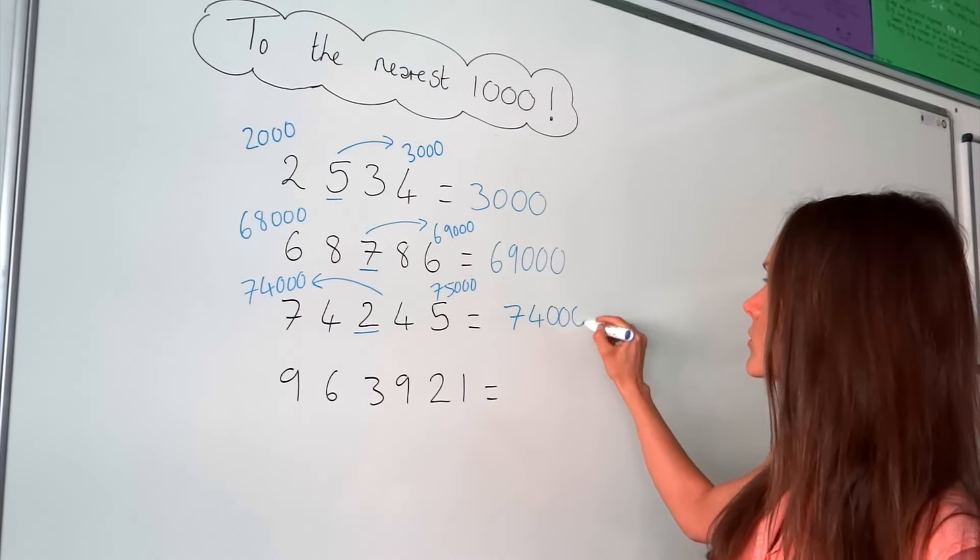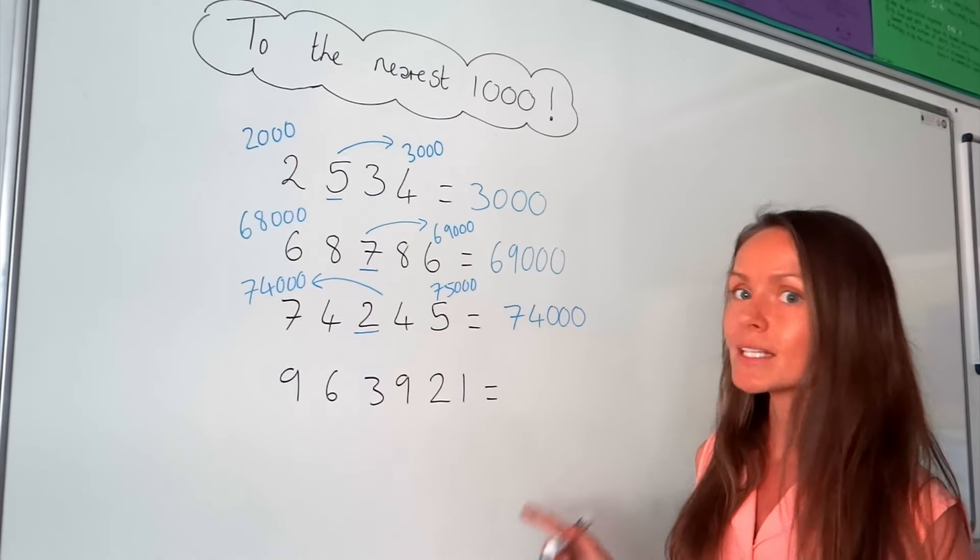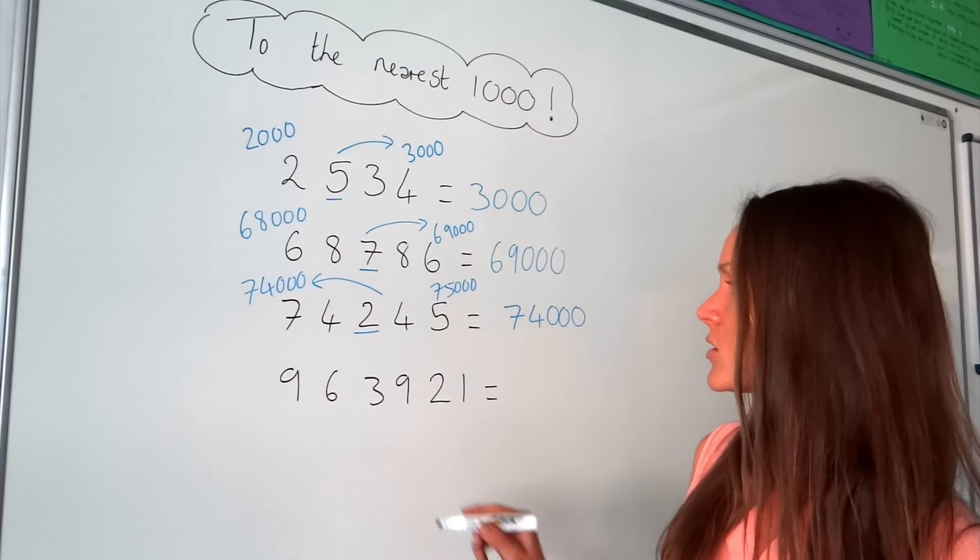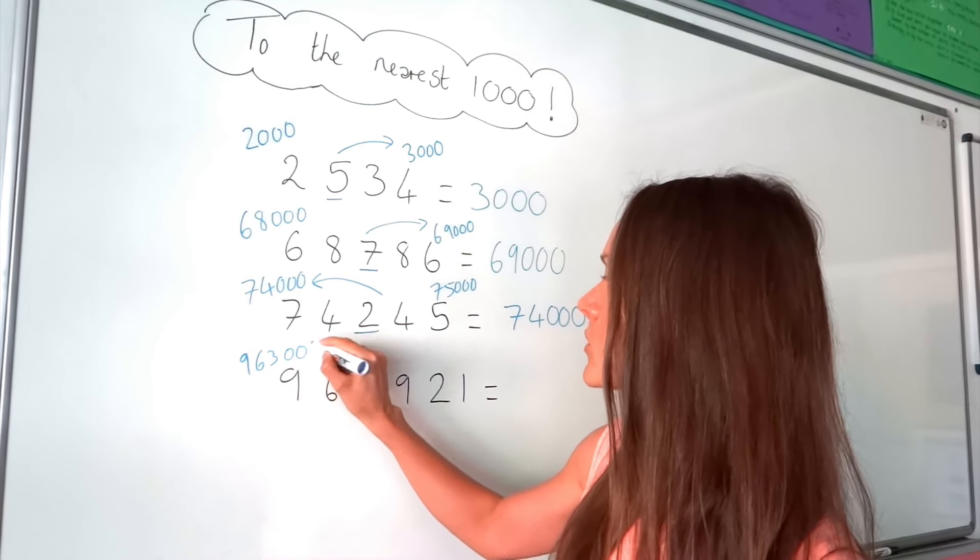Okay, and on to the last one. So this is an even bigger number, but that's fine. It's exactly the same method. So write down your two multiples. So this one is a big number, it's 963,000.